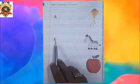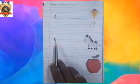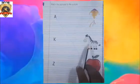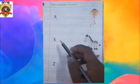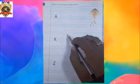Next one is K. A for zebra? No. A for kite? Yes. We will match it like this.